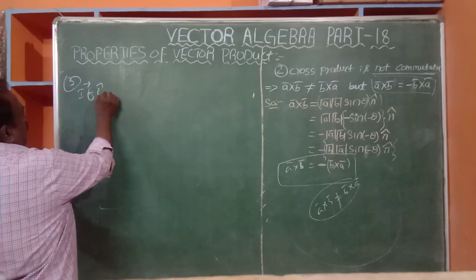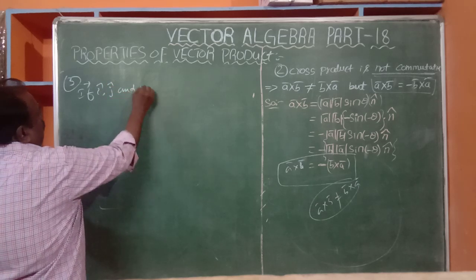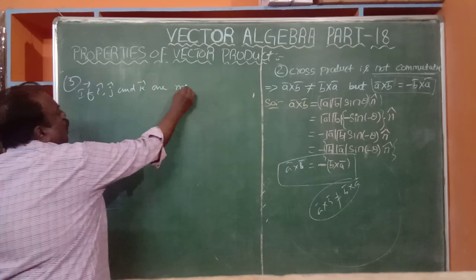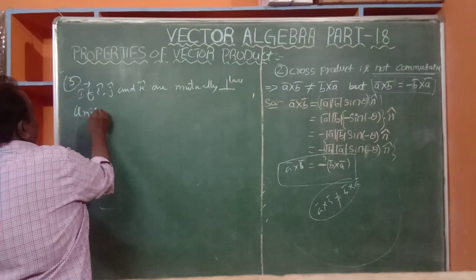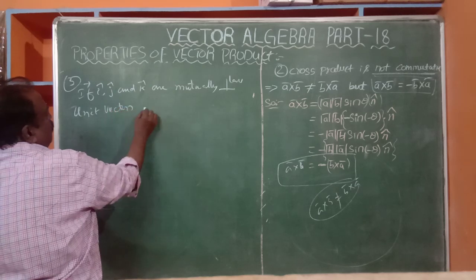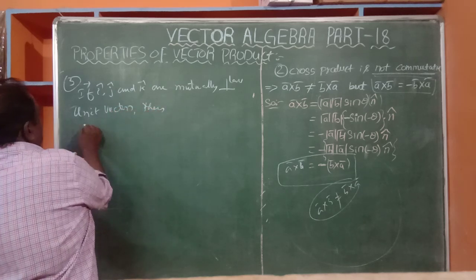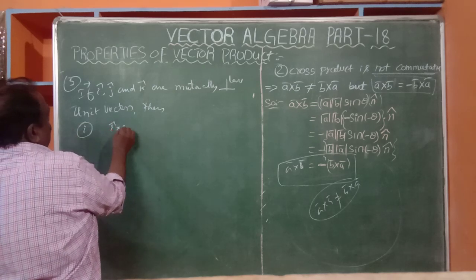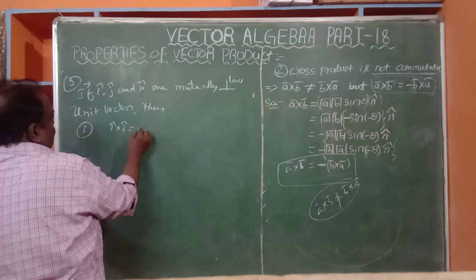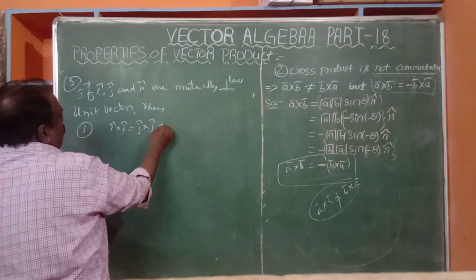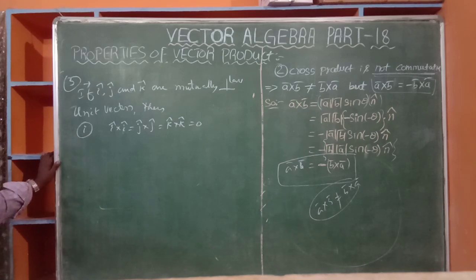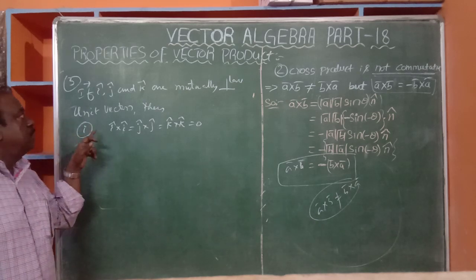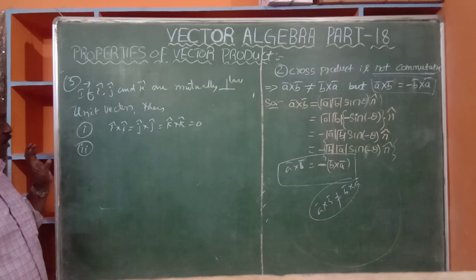If i-cap, j-cap, and k-cap are mutually perpendicular unit vectors — representing the X, Y, and Z axes respectively — then, number one: i cross i = j cross j = k cross k = 0.